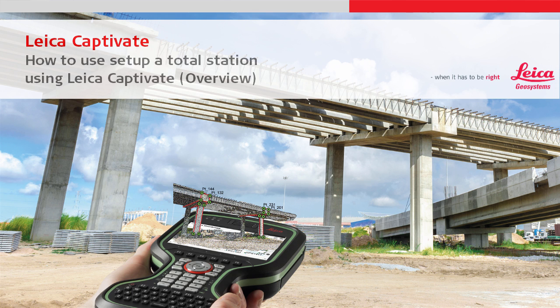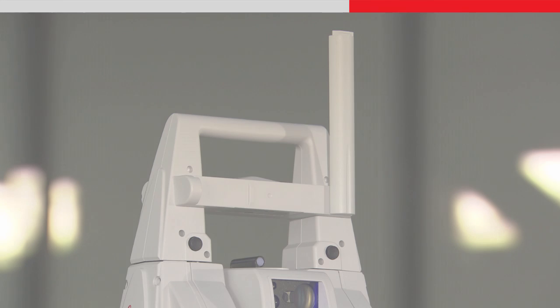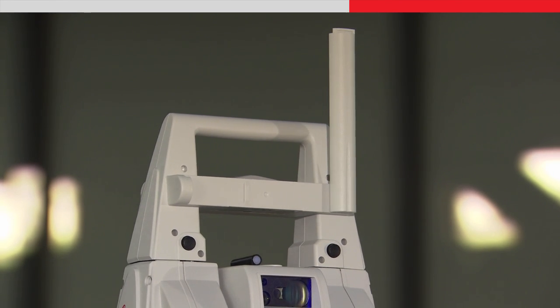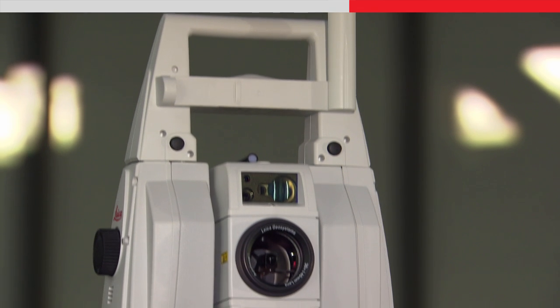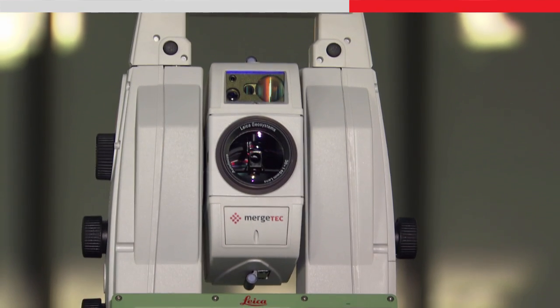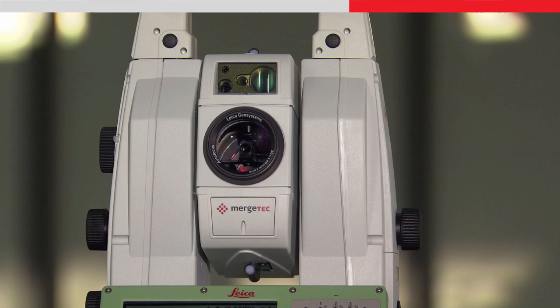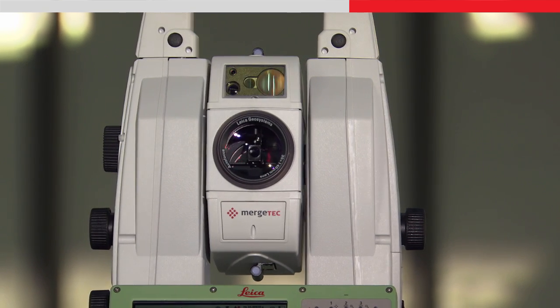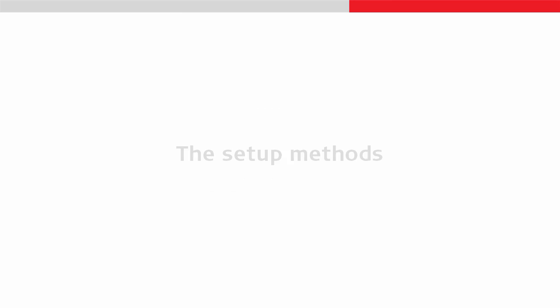This is the first of a series of videos which will describe how to set up a total station using the setup app — that is, how to position and orientate the total station. In this video I will start with an explanation of the different methods and which use case is suitable for which method. Further videos will go into detail and show step by step how to use them. The setup app includes all methods which are needed to set up a total station. Let's start the app and take a look.